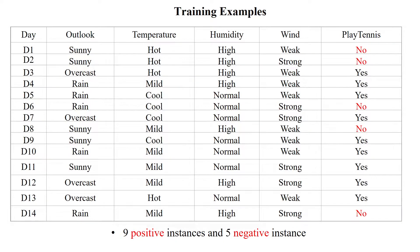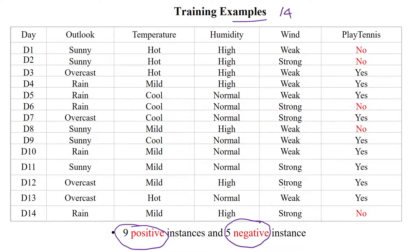Hello everyone. Here we will discuss the ID3 decision tree algorithm based upon the given dataset with 14 samples. In these 14 samples, 9 samples are positive and 5 samples are negative classes. This dataset has four attributes: outlook, temperature, humidity, and wind, and the output label is 'play tennis.' This is a binary class classification with two Boolean values: yes and no.